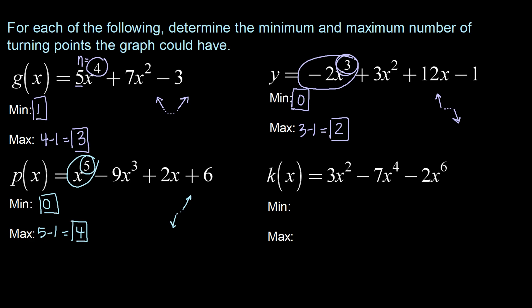And last but not least k of x. Looking for the highest power of x we happen to find it over here at the end. So our degree is 6. So our maximum number of turning points is 6 minus 1 or 5.